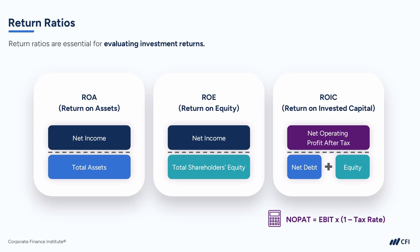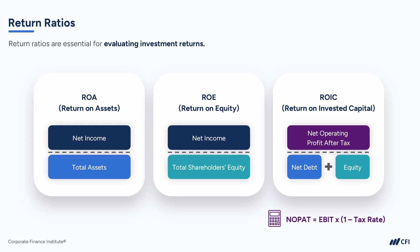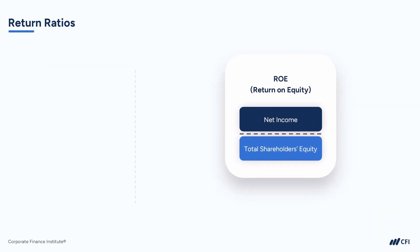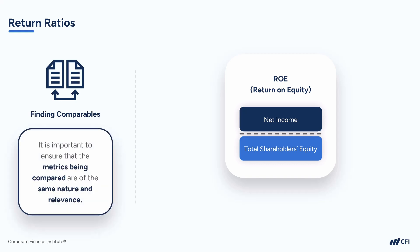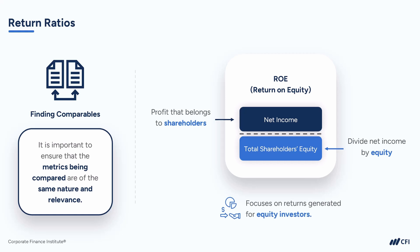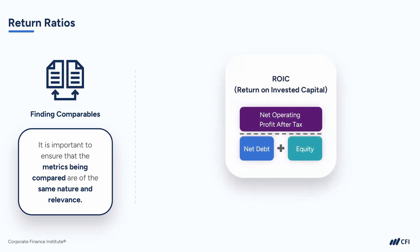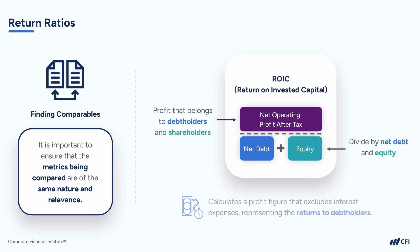Let's discuss a fundamental principle that should always be at the forefront of your mind when conducting financial analysis — comparing apples to apples and oranges to oranges. This principle emphasizes the importance of ensuring that the metrics being compared are of the same nature and relevance. For return on equity, since the profit that belongs to shareholders is net income, we divide net income by equity. For ROIC, we need to incorporate a profit metric that encompasses both shareholders and debt holders, so we calculate a profit figure that excludes interest expenses, representing the returns to debt holders.